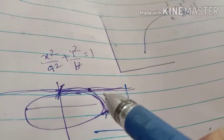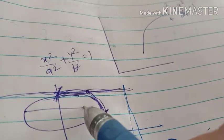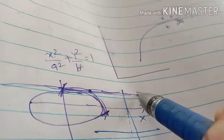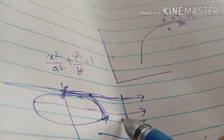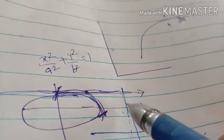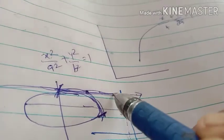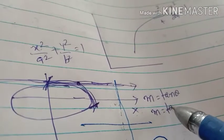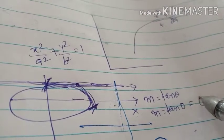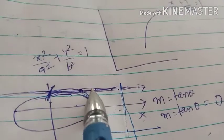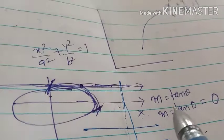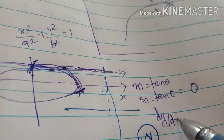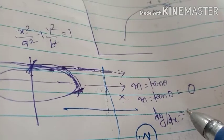If we draw a tangent line to a point on the curve and this line is parallel to the x-axis, then these two lines are parallel, meaning there is no angle between them. Naturally slope = tan θ = tan 0 = 0, therefore slope = 0. So any tangent line parallel to the x-axis has slope equal to 0, meaning dy/dx = 0.